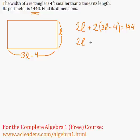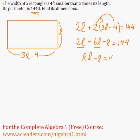So 2L plus—now I can distribute the 2—2 times 3L is 6L, 2 times negative 4 is negative 8, equals 144. So 2L plus 6L is 8L minus 8 equals 144. Now I can add 8 to both sides of the equation.